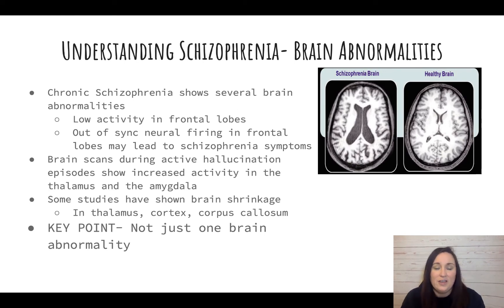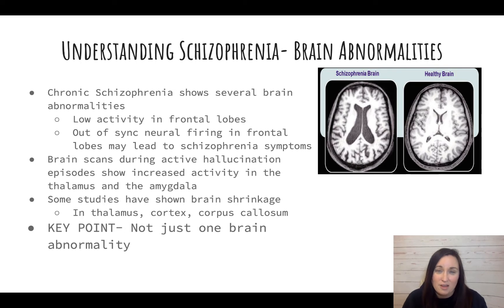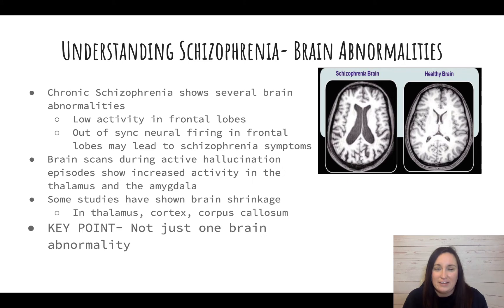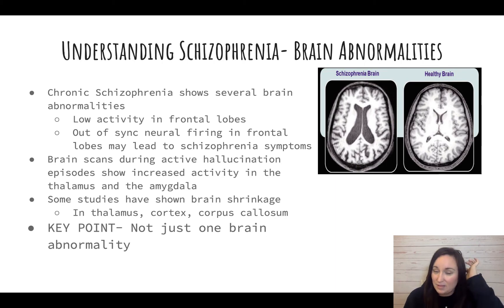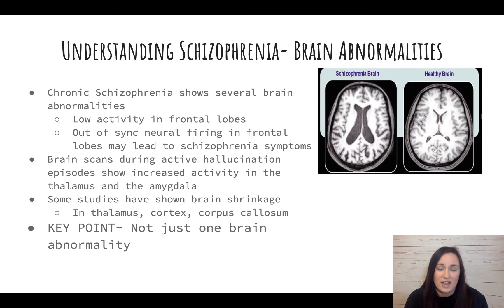Chronic schizophrenia shows several brain abnormalities. There is lower activity in the frontal lobes and the neural firing is out of sync, so the neural network is not working properly, contributing to schizophrenic symptoms. Brain scans taken when people are having hallucinations show increased activity in the thalamus — the part of the brain that receives all sensory information except smell — and also show an increase in the amygdala, our fear and aggression center.